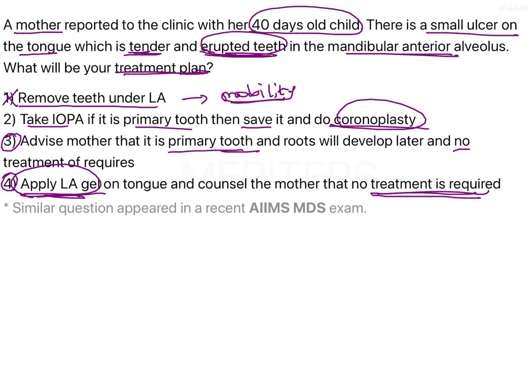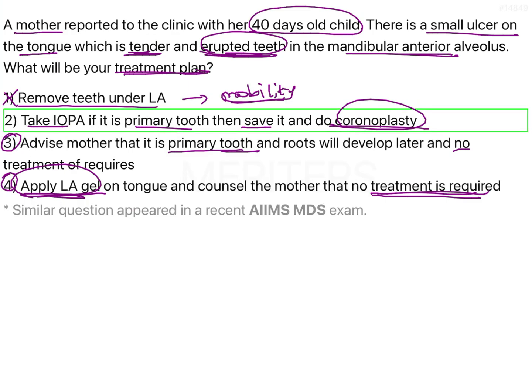So the most appropriate treatment plan is: first, determine whether the tooth is a calcified structure that is mobile or not, and whether it is a primary tooth or not. The second step is to remove the etiological cause of the ulceration on the tongue — that is, if there are any sharp edges, perform coronoplasty to remove the etiological factor so that the ulcer can heal and the child can continue with nutrition as usual. Therefore, the correct answer is option 2.